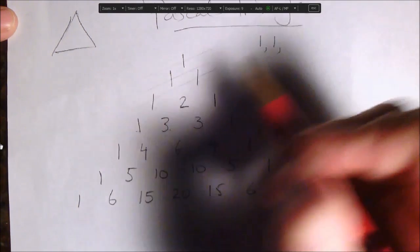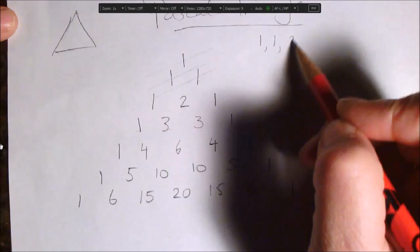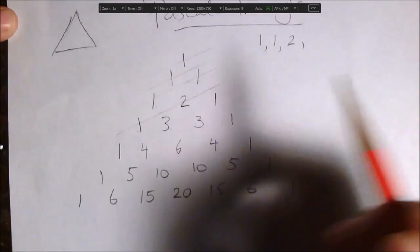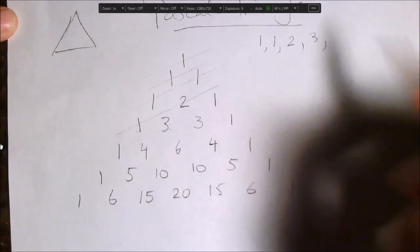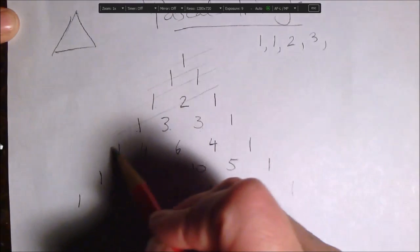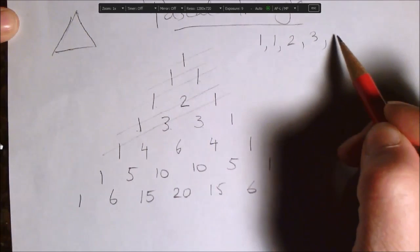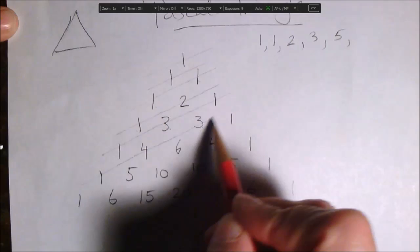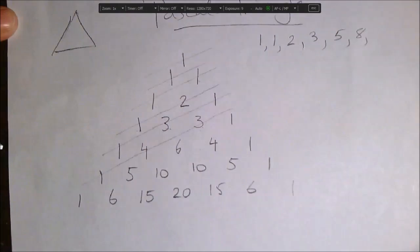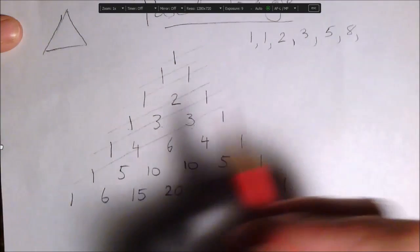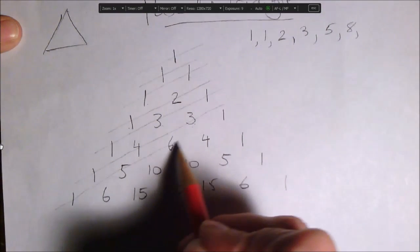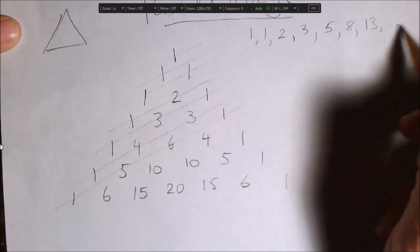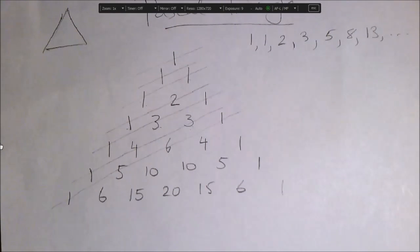So one and one, and then the sum of the other diagonal is two. I'll draw another diagonal. The sum is three. Draw another diagonal. The sum is five. Another diagonal right here. The sum is eight. Look at that. It's Fibonacci. Here's our 13. Okay. So lots of cool things.